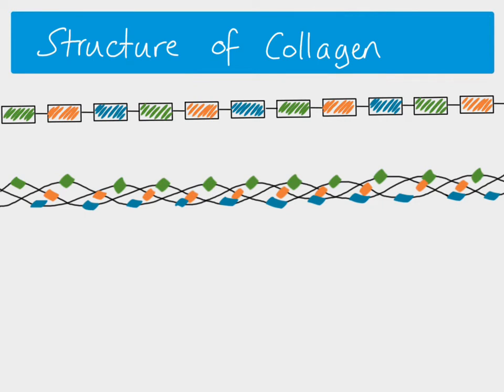This triple helix is what we call a collagen molecule. The other important thing is that the chains are obviously bound together. Amino acids on adjacent polypeptide chains are held together by hydrogen bonds. So it's very compact already, but then you've got lots of hydrogen bonds holding that triple helix — holding the collagen molecule — together.